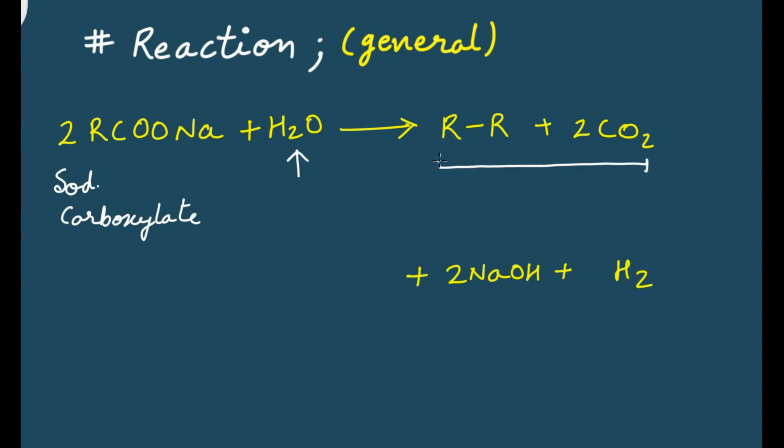At anode you will get alkane and carbon dioxide. This is your symmetrical alkane. Now how many groups are there? There are two. We have taken two molecules of sodium carboxylate, out of which these two R groups will combine to give alkane, so we will get symmetrical alkane just like Wood's synthesis.